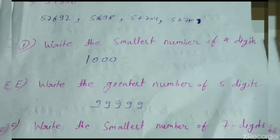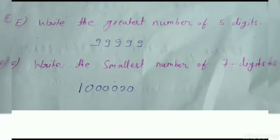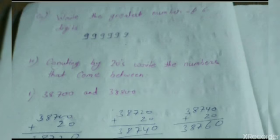Now we have to write the smallest 4-digit number of the largest. Write the greatest number of 5 digits — whenever greatest is asked for a five-digit number, write nine five times. For a four-digit greatest number, write nine four times. Write the smallest seven-digit number — write 1 and then six zeros. Write the greatest six-digit number — write nine six times.